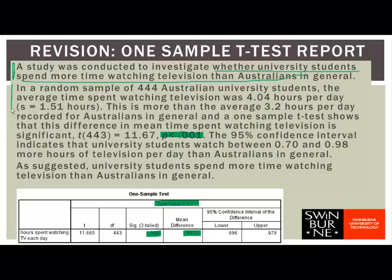The next part of the report, we give some information about the sample — what sort of people were in the sample (Australian university students), how many there were (444), and we give the mean of our variable. The mean time spent watching television was 4.04 hours per day, and the standard deviation was 1.51 hours. Next, we explicitly compare our sample mean to that reference mean — this is more than the average of 3.2 hours per day recorded for Australians in general. Then we say what sort of test we used: a one-sample t-test.